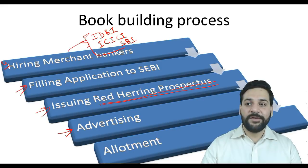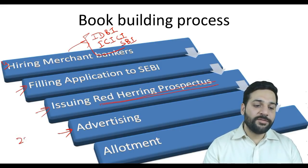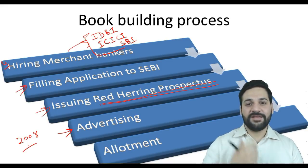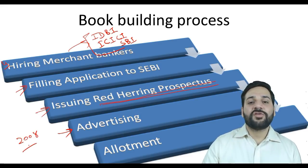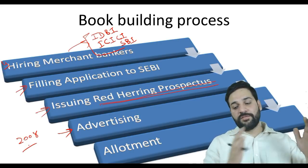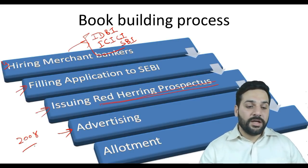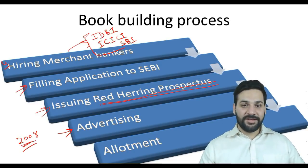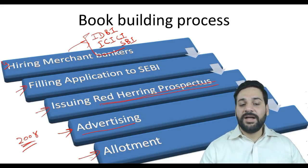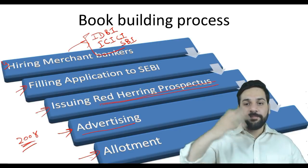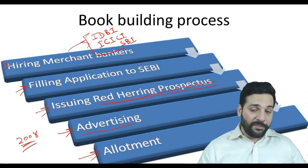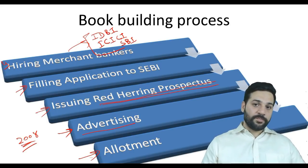The company will then advertise the IPO widely — the last major example was Reliance Power in 2008, which was, in my opinion, a kind of scam. You can search for the stock price history of Reliance Power on Google. There were huge advertisements on TV and in newspapers everywhere. After advertising, the company makes an allotment and is then listed on the stock market.